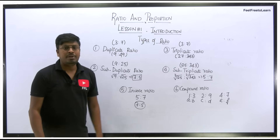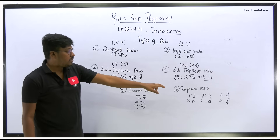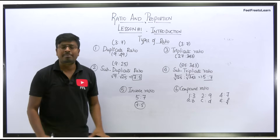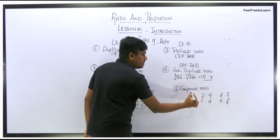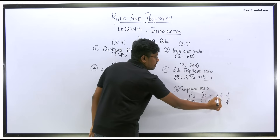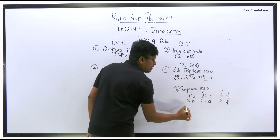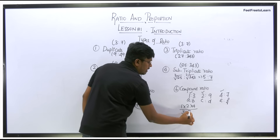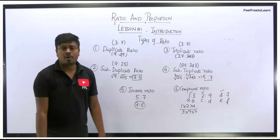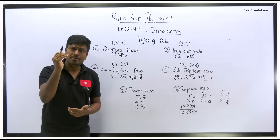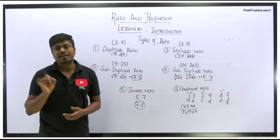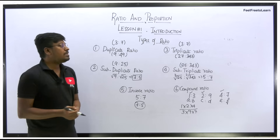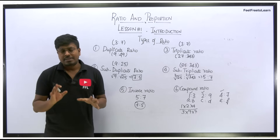The last type is compound ratio. For example, given a:b = 1:3, c:d = 2:9, e:f = 4:7 — to find the compound ratio, multiply all the first numbers together and all the second numbers together. So the compound ratio is (1×2×4) : (3×9×7). Compound ratio means the numerator is the product of all first values of the given ratios, and the denominator is the product of all second values.